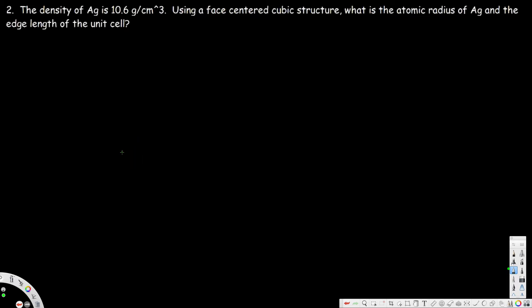Let's look at this problem. The question asks: the density of Ag is 10.6 grams per centimeter cube; using a face-centered cubic structure, what is the atomic radius of Ag and the edge length of the unit cell? So they are asking for the atomic radius r and also the edge length x.